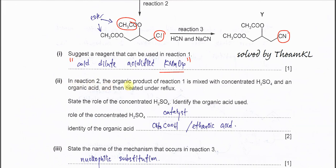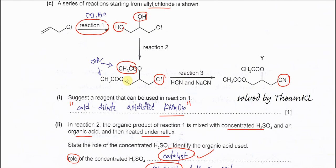Part C(ii). In reaction 2, the organic product of reaction 1 is mixed with concentrated H2SO4 and one organic acid and heated under reflux. The catalyst used is H2SO4. The role of H2SO4 is catalyst. The identity of organic acid is ethanoic acid, so it will form this ester.